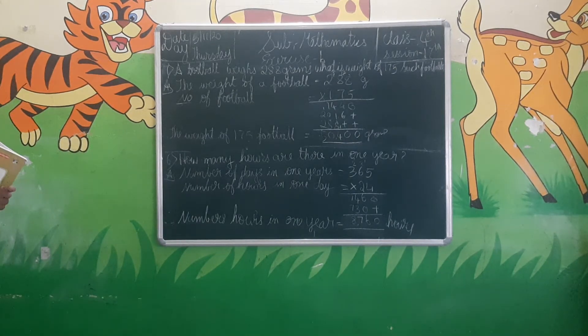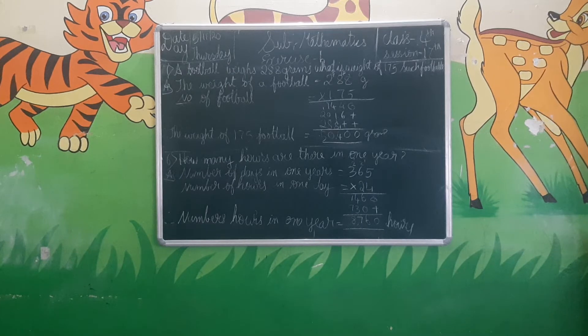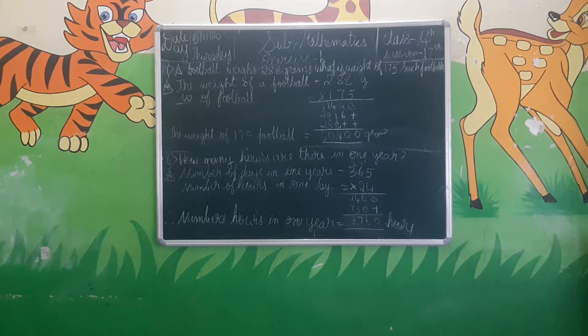Multiply 288 into 175 and you will get the answer as 50,400 grams. The weight of 175 footballs is 50,400 grams.